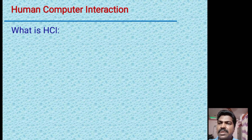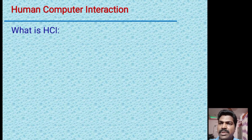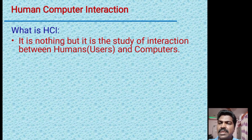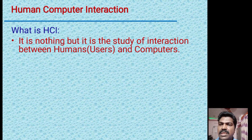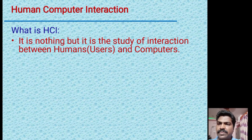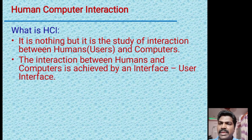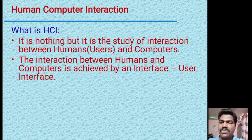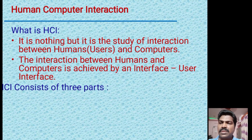HCI stands for human-computer interaction. The name itself says how humans are going to interact with computers. The main concept of HCI is how a human is going to interact with a computer. It is a study of interaction between humans — also called users — and computers, and this interaction is achieved through an interface which we call the user interface.